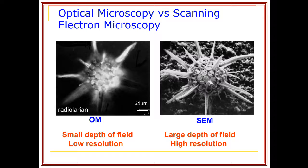However, the optical microscope has limitations — it is very difficult to observe oxide morphology, dislocations, crystal defects, or crystal structures. For these, it is important to go to electron microscopy. The optical microscope has a small depth of field and low resolution, whereas the SEM (scanning electron microscopy) offers a large depth of field and high resolution. In the next lecture we will discuss SEM.